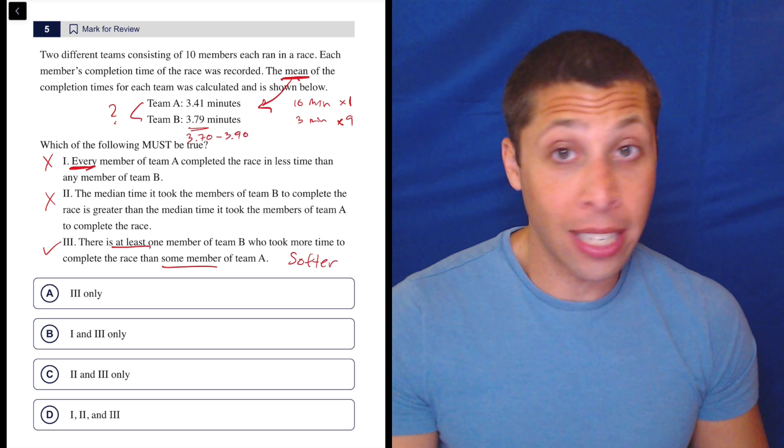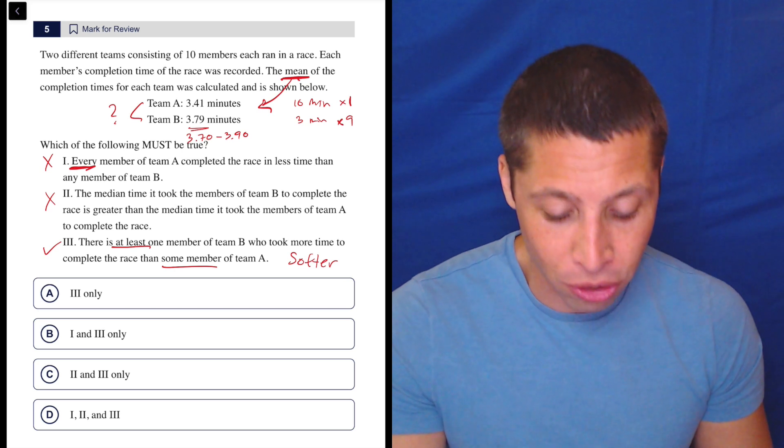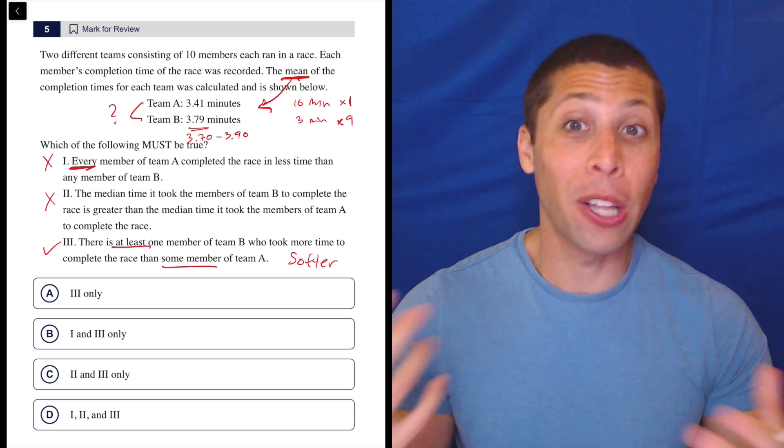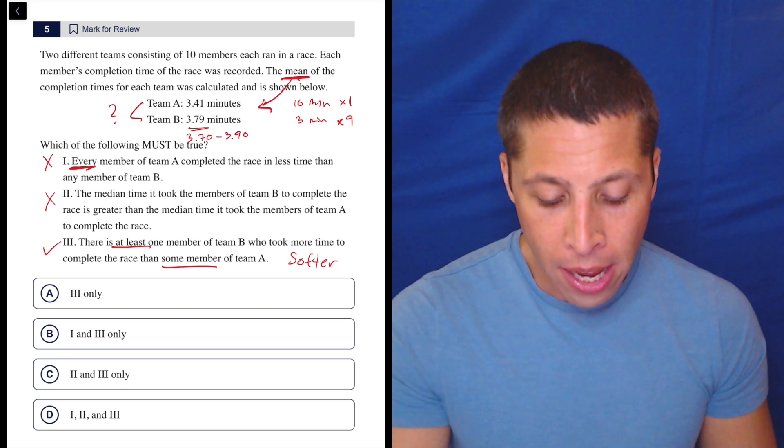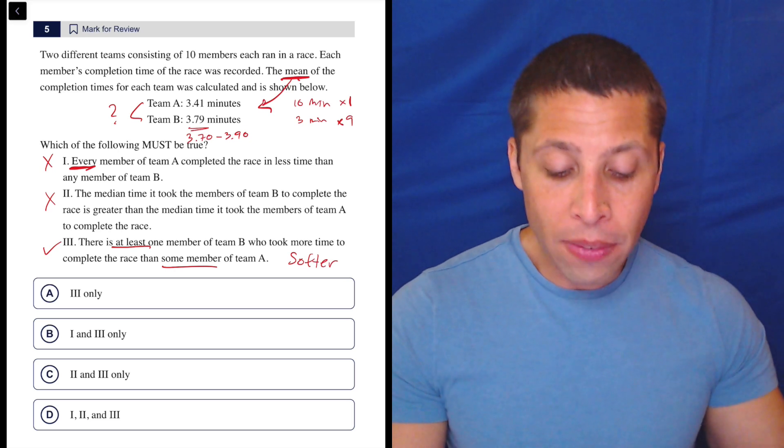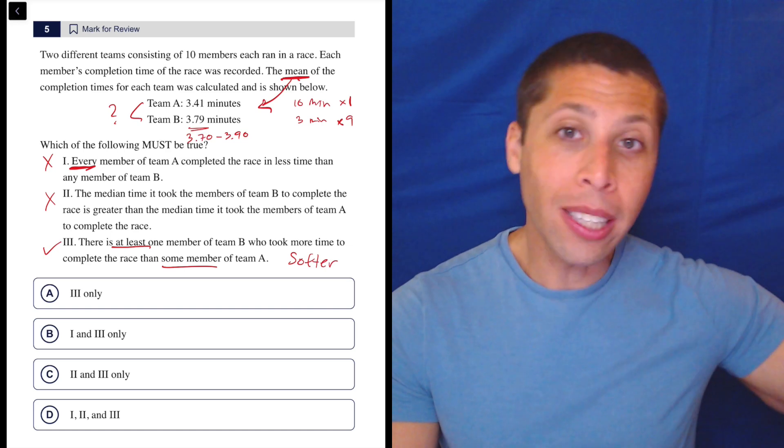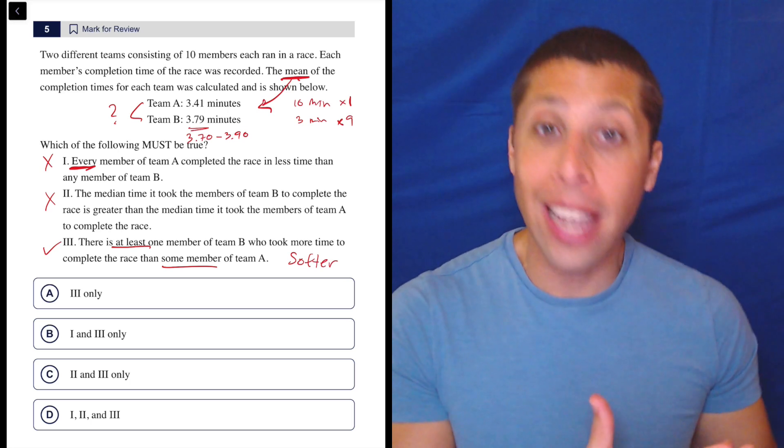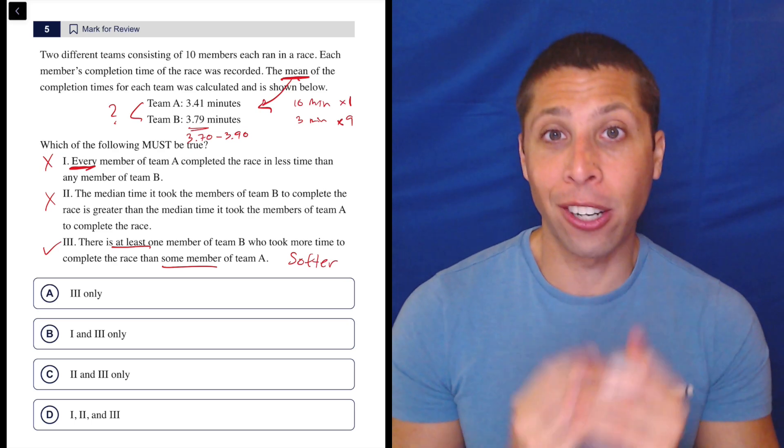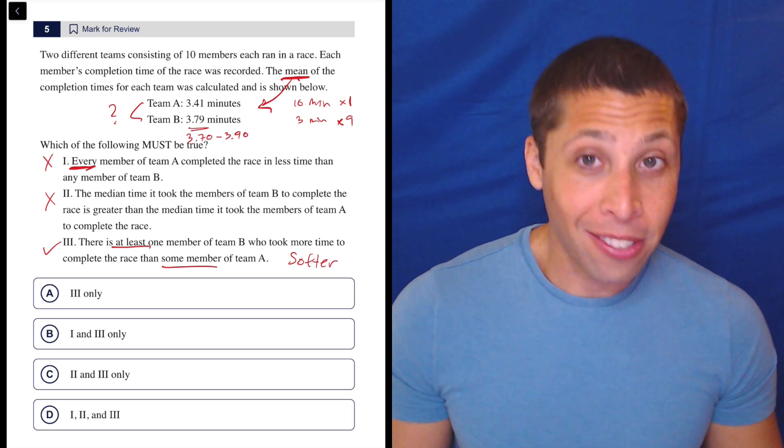If you had to just guess randomly, Roman numeral three is kind of how these answer choices tend to sound for statistics questions. It gives more wiggle room. It allows things to flow without us being really pinned down to one particular situation. The reason this must be true is an average is taking into account all of the people. So even if every other member of Team B was faster than every other member of Team A, if there's one really slow Team B member, they're going to bring the average up. That one person is going to have a higher time than the people in Team A.